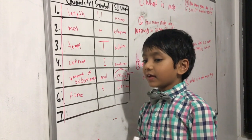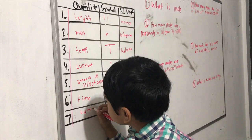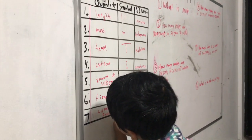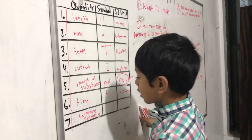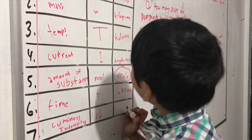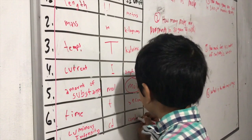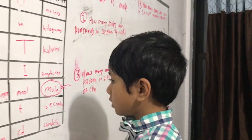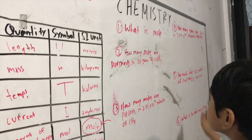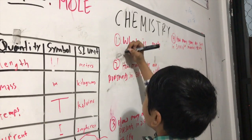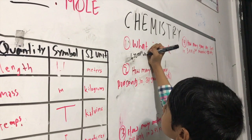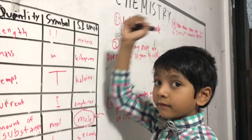And number seven is luminous intensity. The symbol for that is C.D. And the SI unit is candelas. Number one. What is Moles? The value of a mole is 6.02 times 10 to the 23rd object. Just like the value of a dozen is 12 of something.